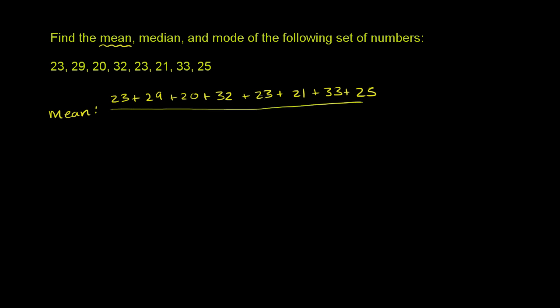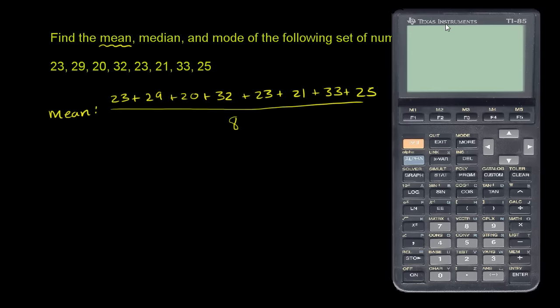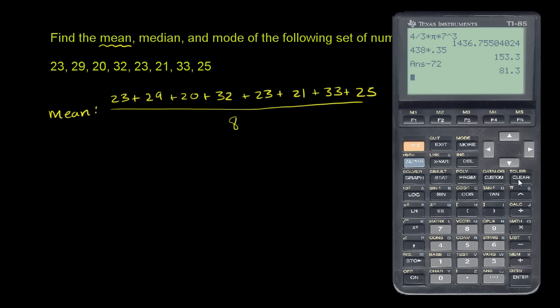So we have 1, 2, 3, 4, 5, 6, 7, 8 numbers. So you want to divide that by 8. Let's figure out what that actually is. I'll just get the calculator out for this part. I could do it by hand, but we'll save some time.